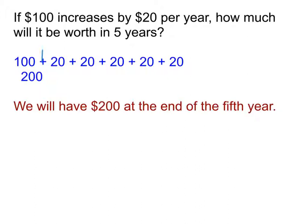Because of course, 20 plus itself five times — or in other words, five times 20 — gives us 100. And 100 plus 100 is 200. So in this case, we would have $200 at the end of the fifth year.